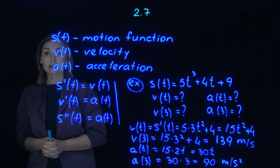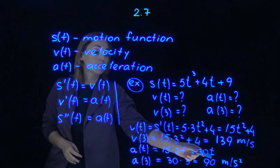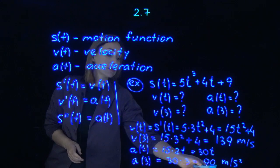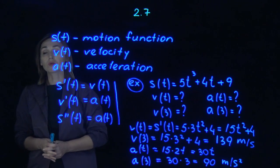And after that the last question is acceleration at 3. Plug in 3 for the argument of the function at 3. 30 times 3 will give me 90, and the units are meters per second squared.